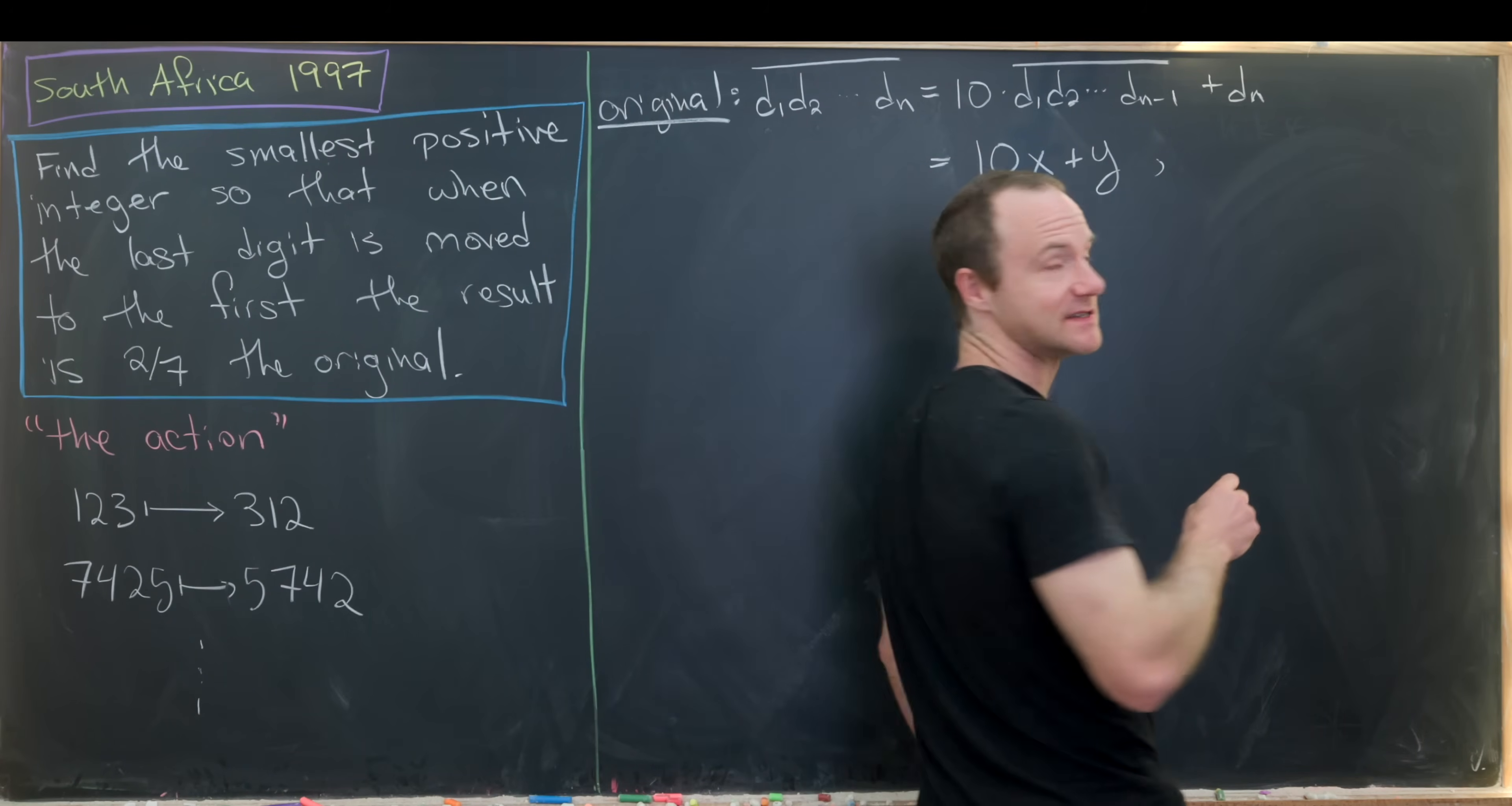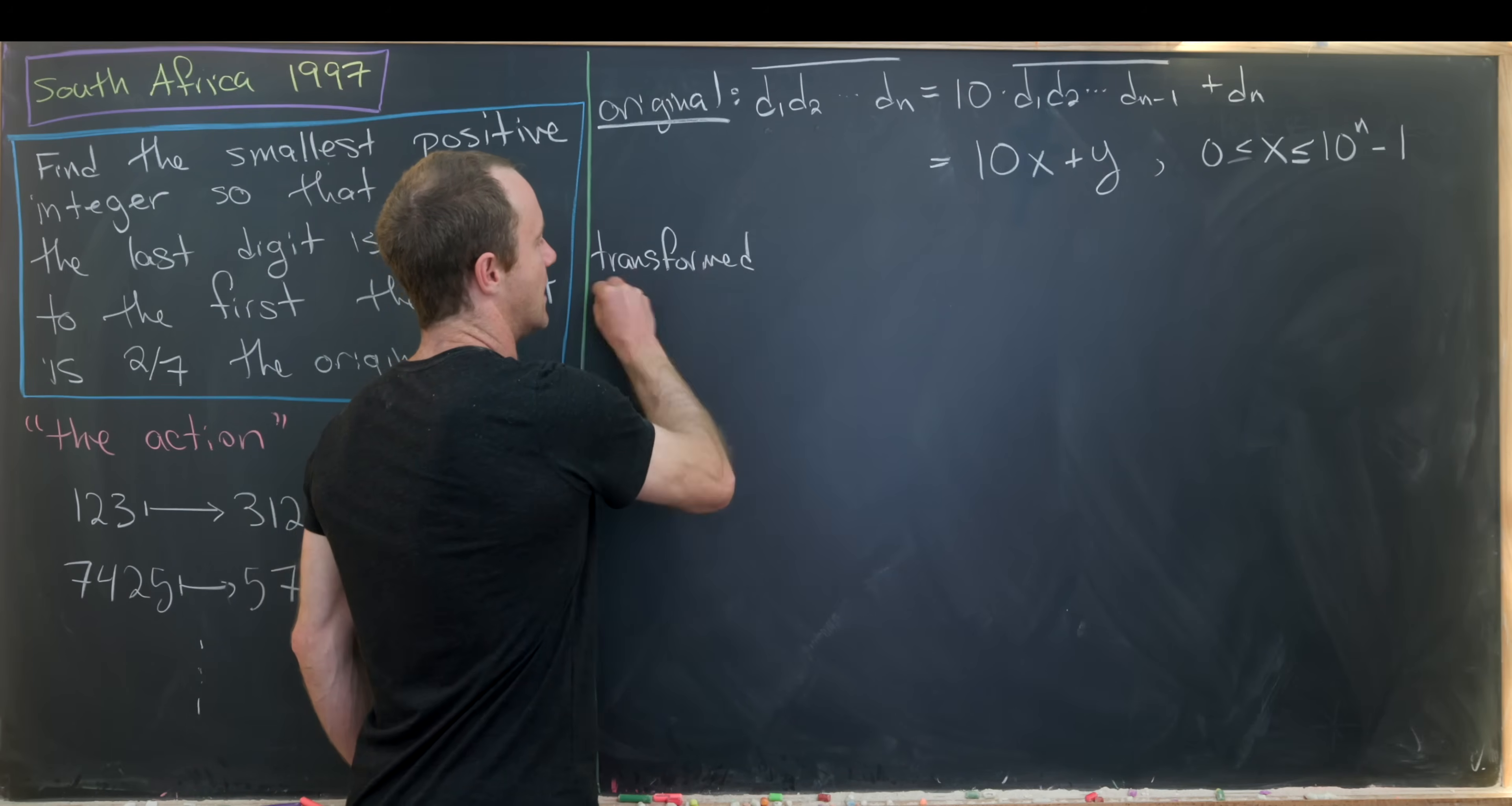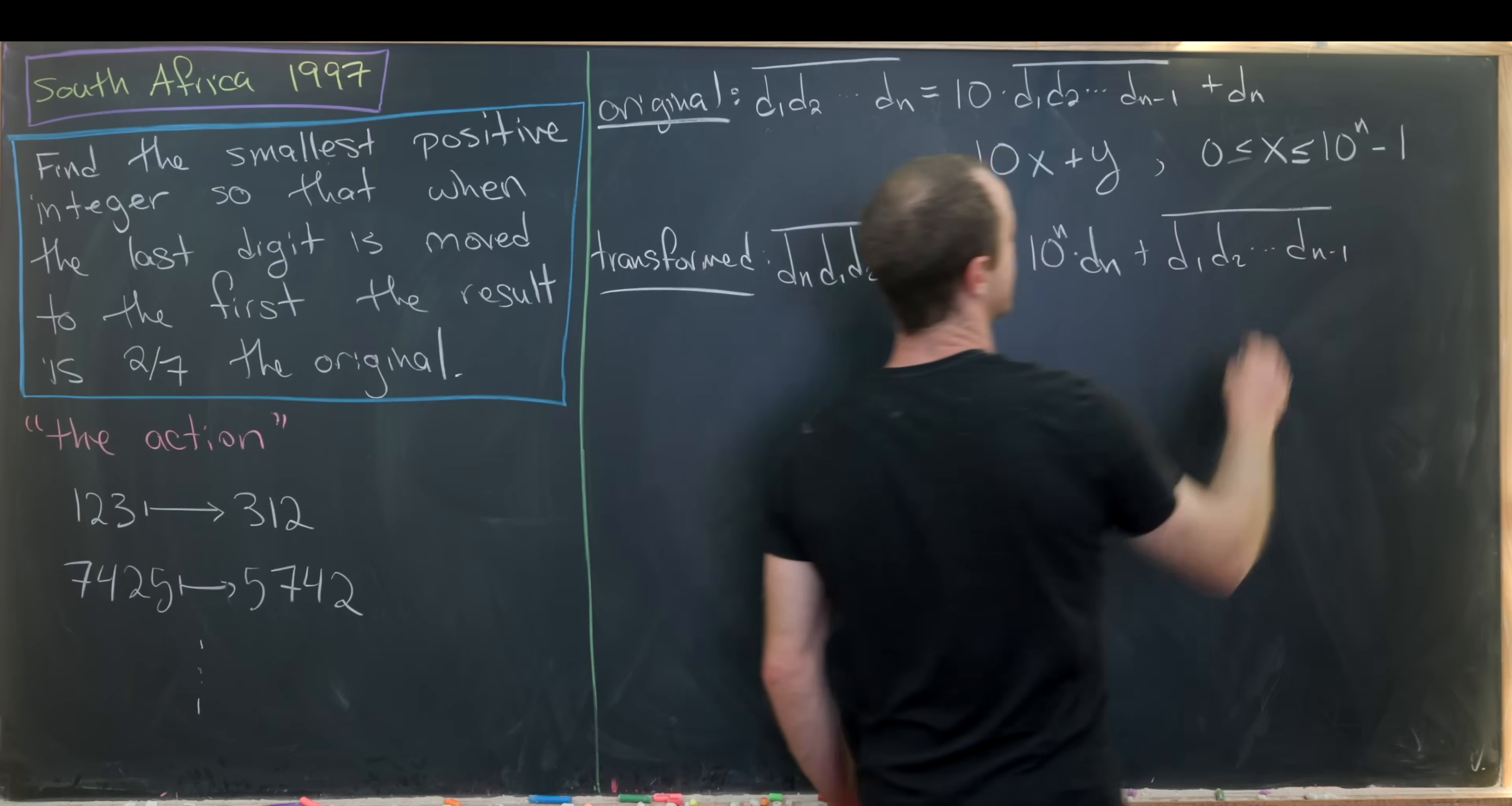And I guess I should point out that x now comes from the set between zero, I guess it can't be equal to zero, because that wouldn't be that interesting, up to 10 to the n minus one. So that would be like a string of n nines. So that's good. Now let's see what our transformed number looks like. And so we'll play the same game on this. So what have we done? We've taken the last digit and moved it to the first position. So this now looks like dn, d1, d2, all the way up to dn minus one. But now expanding it similarly, I see that I have 10 to the n times dn, and then plus d1, d2, all the way up to dn minus one.